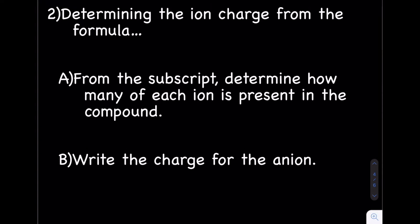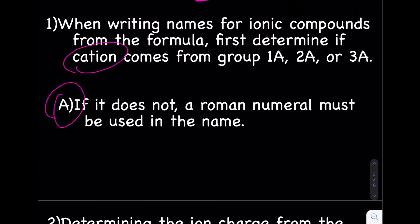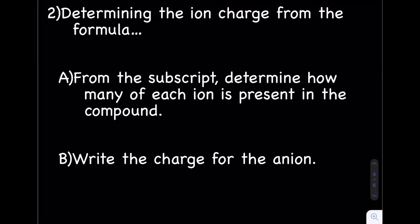So when we're looking at a name, the Roman numeral is really helpful because they tell you the charge. But what about if you only know the formula and you have to figure out the name? That can be a little trickier. So, using Roman numerals in names. We're going to do the practice problem FeCl2, and we want to write the name. The first thing you need to do is determine if the cation comes from group 1A, 2A, or 3A. If it doesn't, we're going to need to use a Roman numeral.